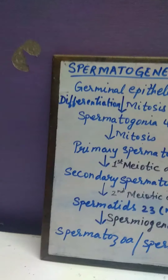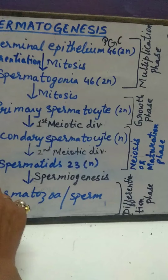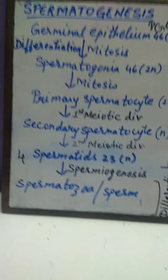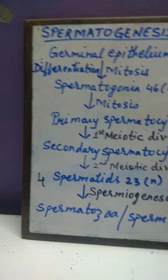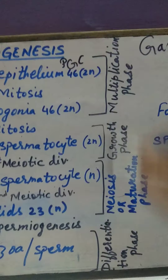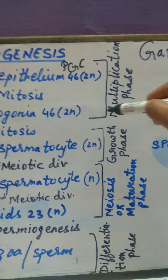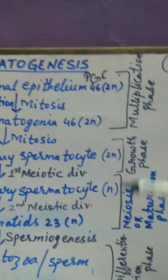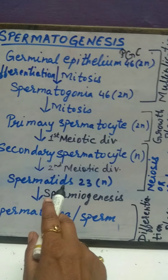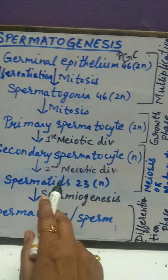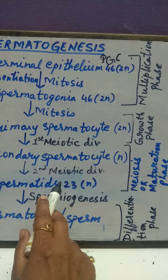The secondary spermatocytes further undergo a second meiotic division, which results in the formation of haploid spermatids. Four haploid spermatids are formed in total. So through the multiplication phase, growth phase, and maturation phase, four haploid spermatids are produced.